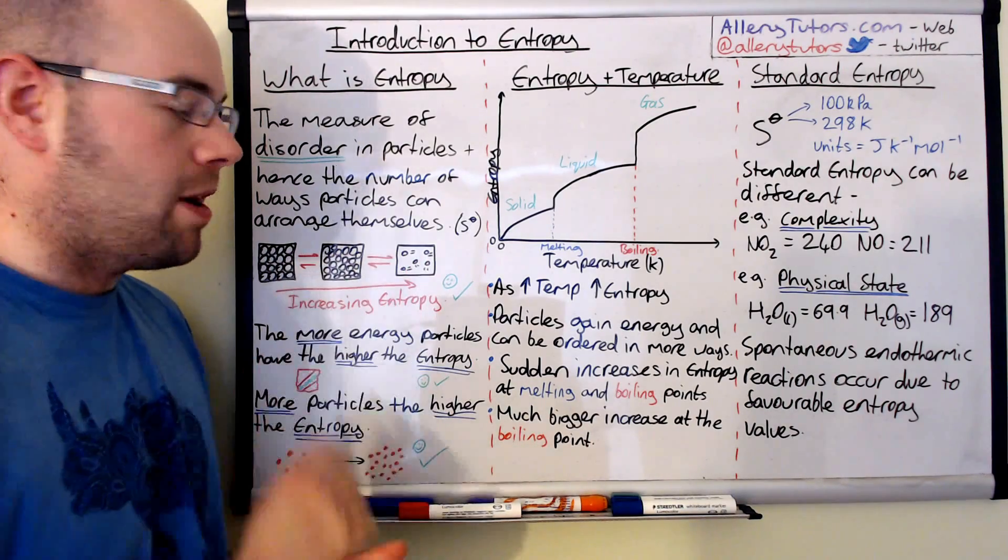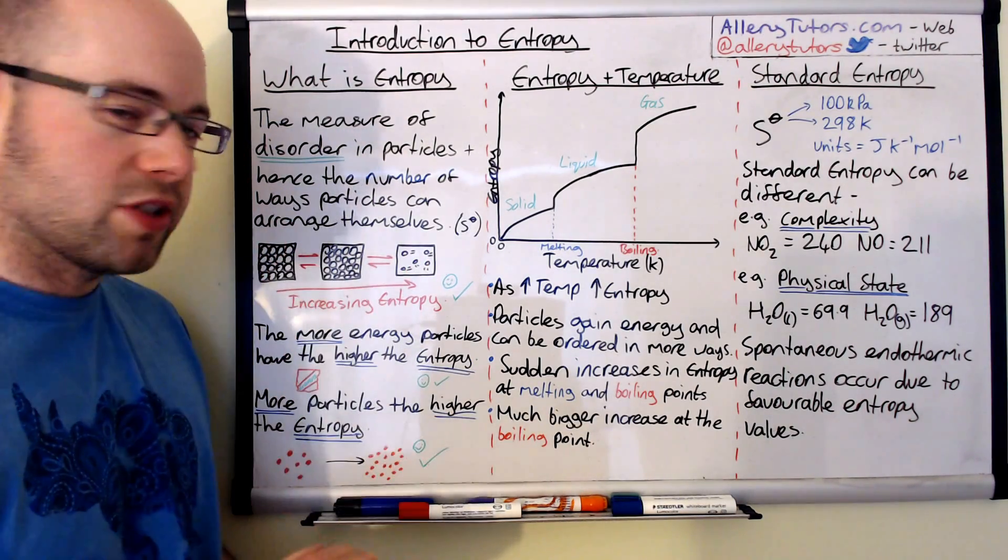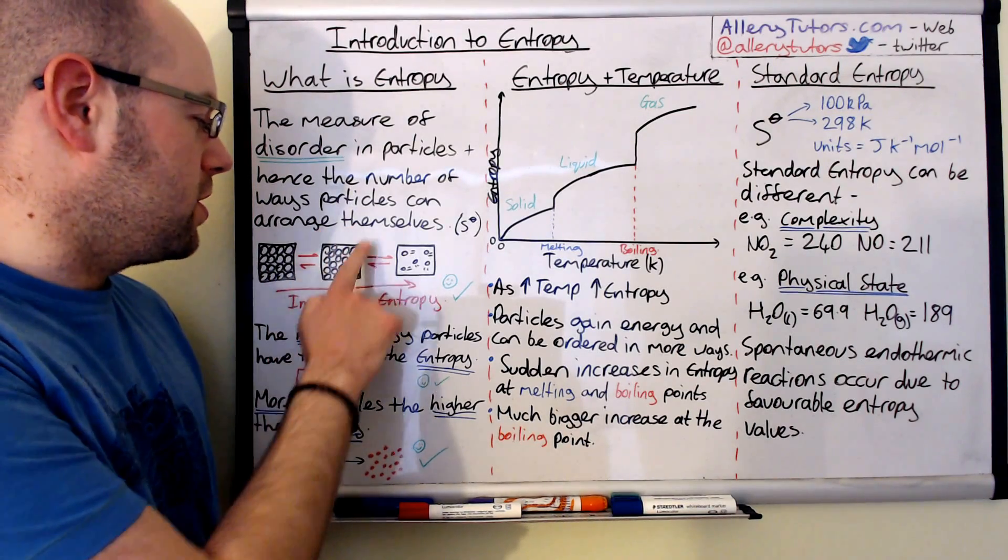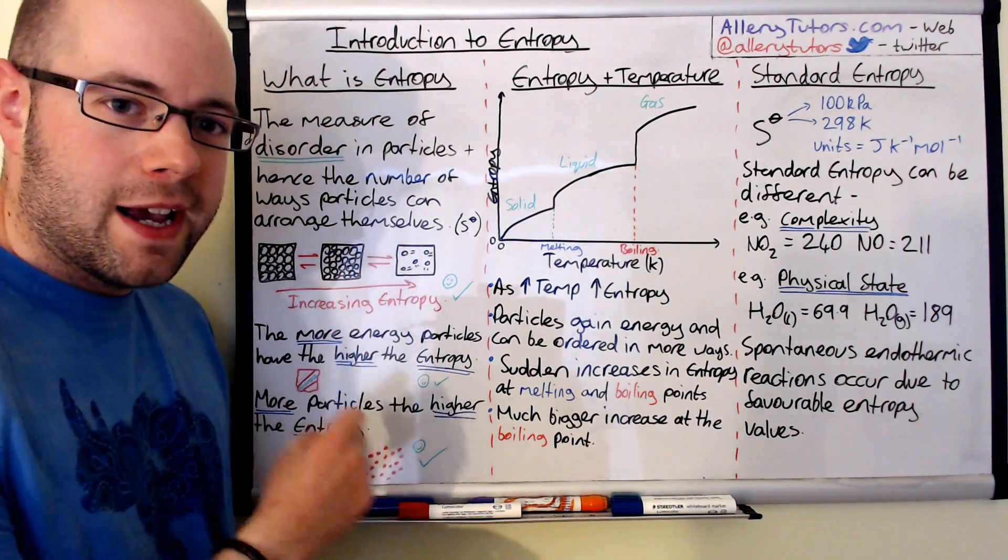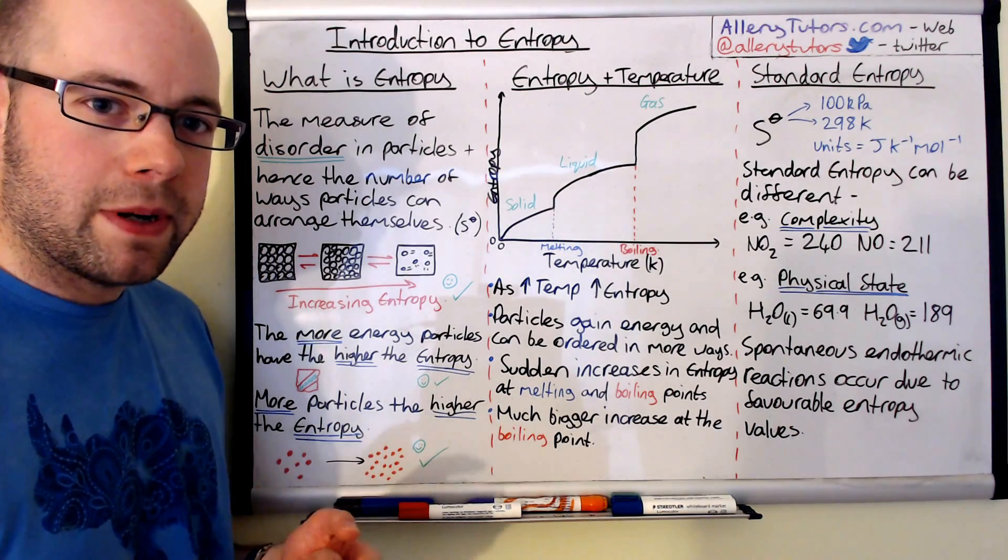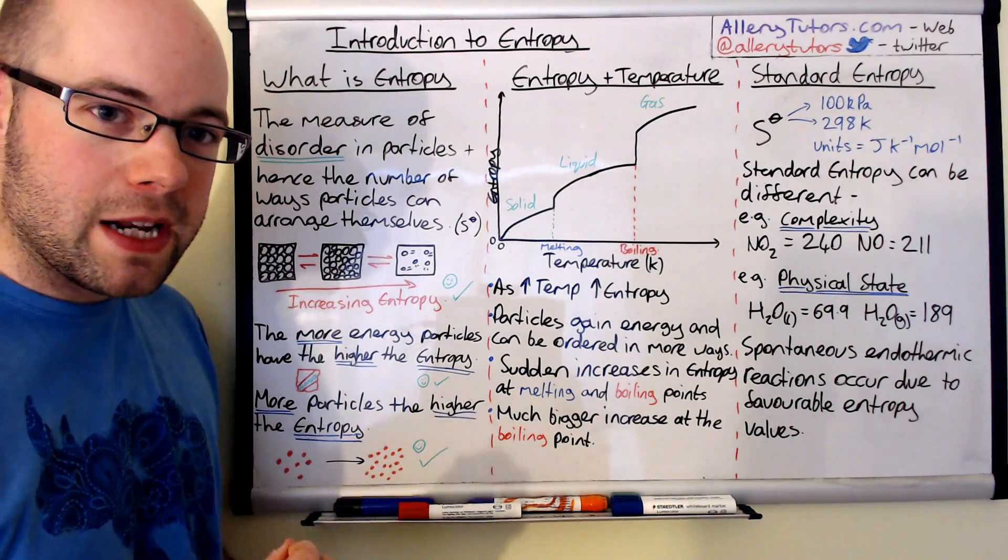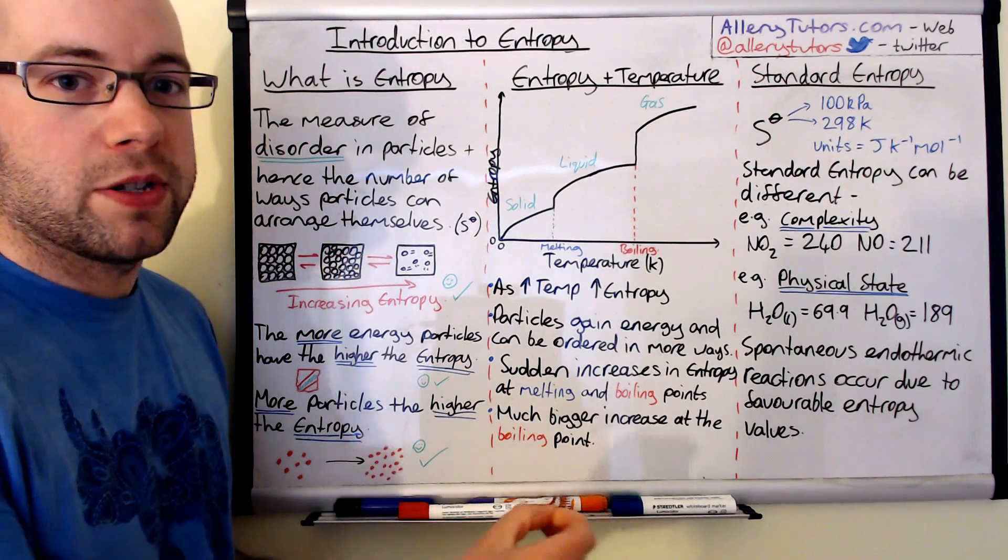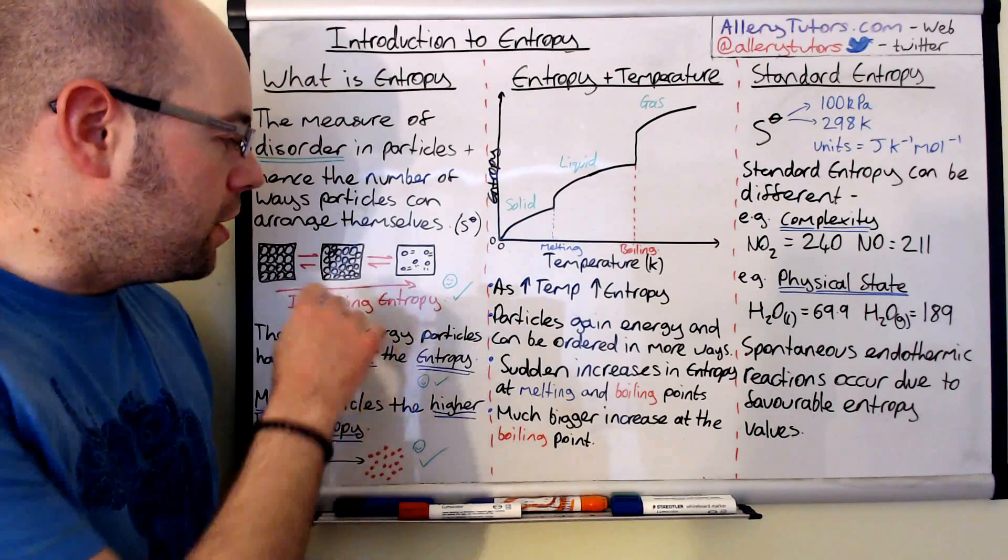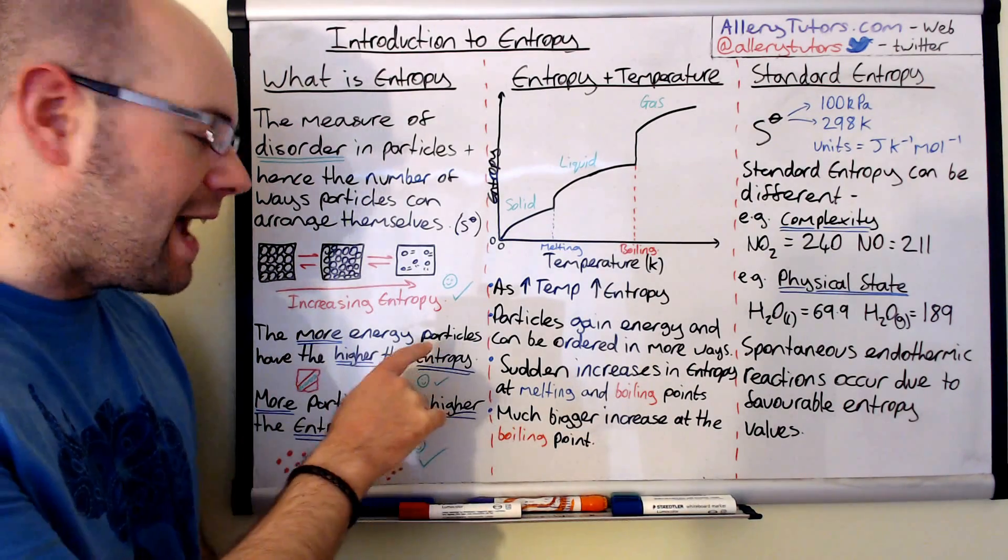This diagram here explains this. You can see we've got particles in a solid, then particles in a liquid, then particles in a gas. Going from a solid to a gas in any reaction is entropically favorable, so the entropy value of whatever the chemical would be is going to be more positive and get bigger.